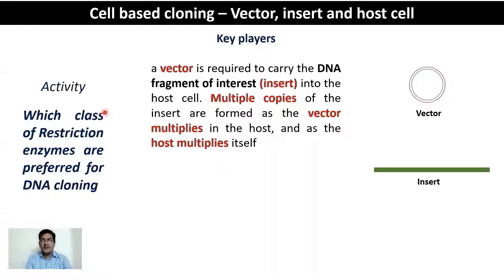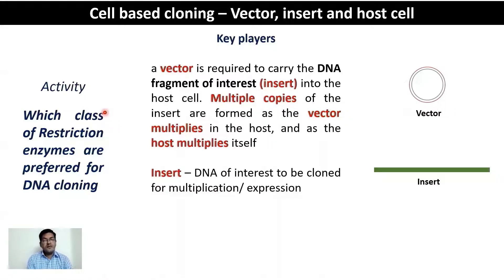The second key player in the cell-based cloning system is the insert. The insert is a piece of DNA that you want to amplify, and if it comes from a coding region, you may also want to express the protein from it. Therefore, vector-insert compatibility is of critical importance. Vectors have evolved to accommodate the varying properties of the insert.